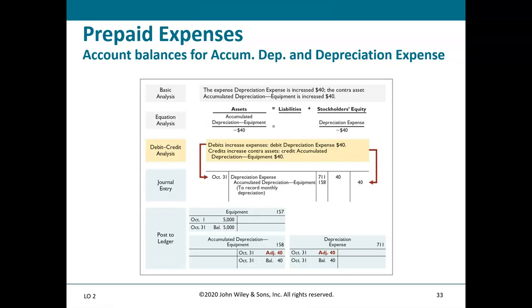Here is the analysis: debit Depreciation Expense, credit Accumulated Depreciation — Equipment; record the journal entry and post to the ledger. Notice the Equipment account stays at its historical cost — we don't change it. The Accumulated Depreciation account builds up as a credit over time. After one month we have $40 in both Depreciation Expense and Accumulated Depreciation.